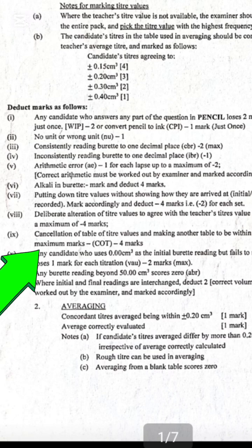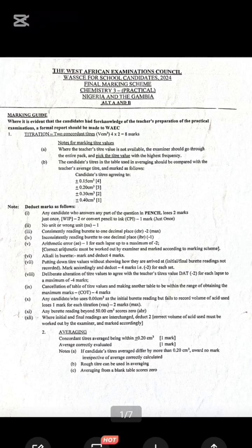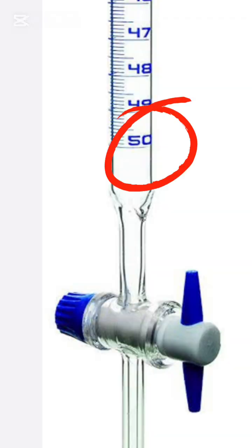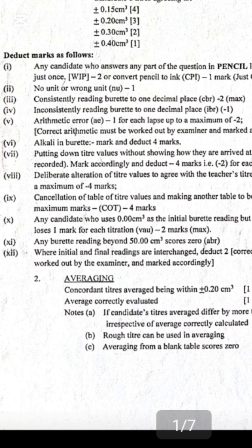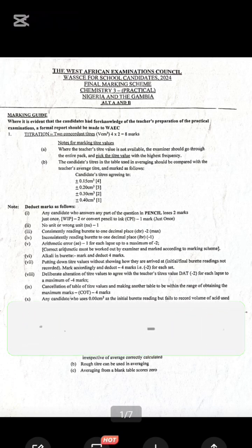Number ten: any candidate who uses 0.00 cm³ as the initial burette reading, which fails to record the volume of acid used — we call it VAU — and the maximum deduction is minus two. Number eleven: any burette reading beyond 50.00 cm³ scores zero, because the maximum a burette can take is 50 cm³. Number twelve: where the initial and final readings are interchanged, you deduct another two marks.